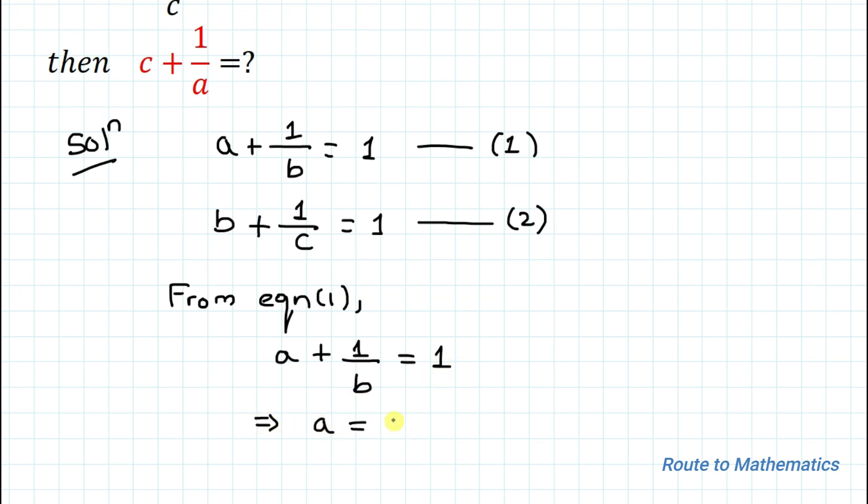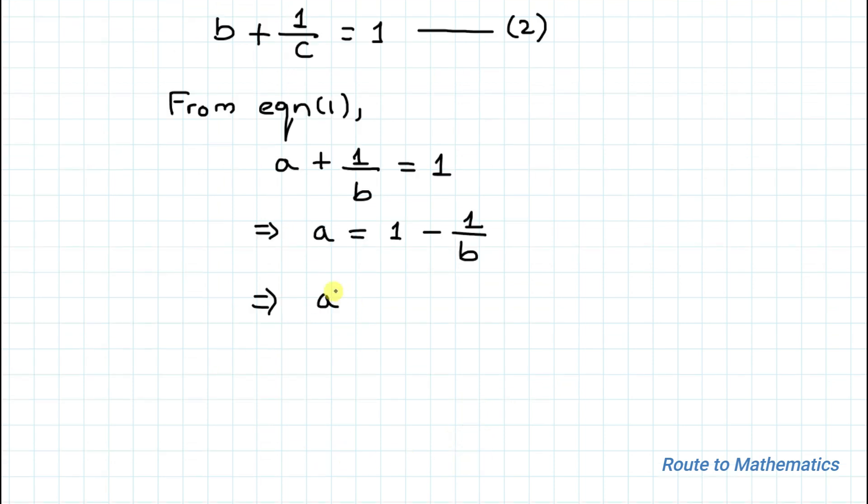Then a = 1 minus 1/b. In the next step, a equals—I'll take b as common—so (b - 1)/b. But in the question we are asked to find the value of 1/a, so let's convert it into 1/a.